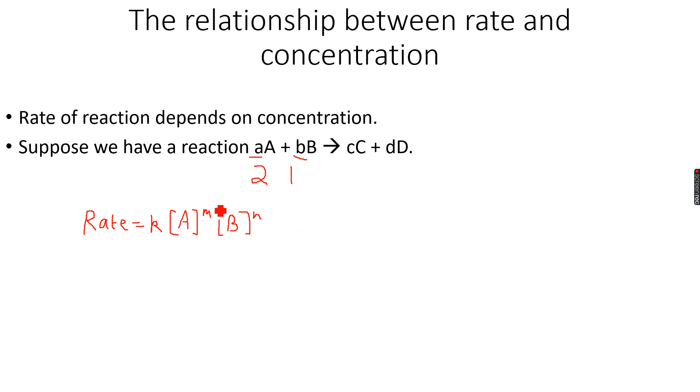These can have any value and we have to calculate these values from experiment. We use different concentrations of A and B and we measure the rate each time. After measuring the rate each time, we calculate the values of m and n.